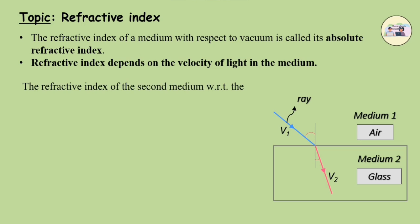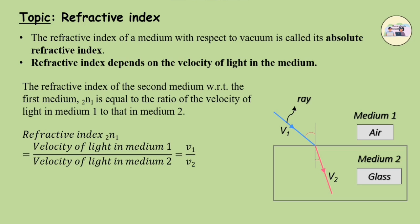The refractive index of the second medium with respect to the first medium, 2N1, is equal to the ratio of the velocity of light in medium 1 to that of medium 2. Refractive index 2N1 equals V1 upon V2.